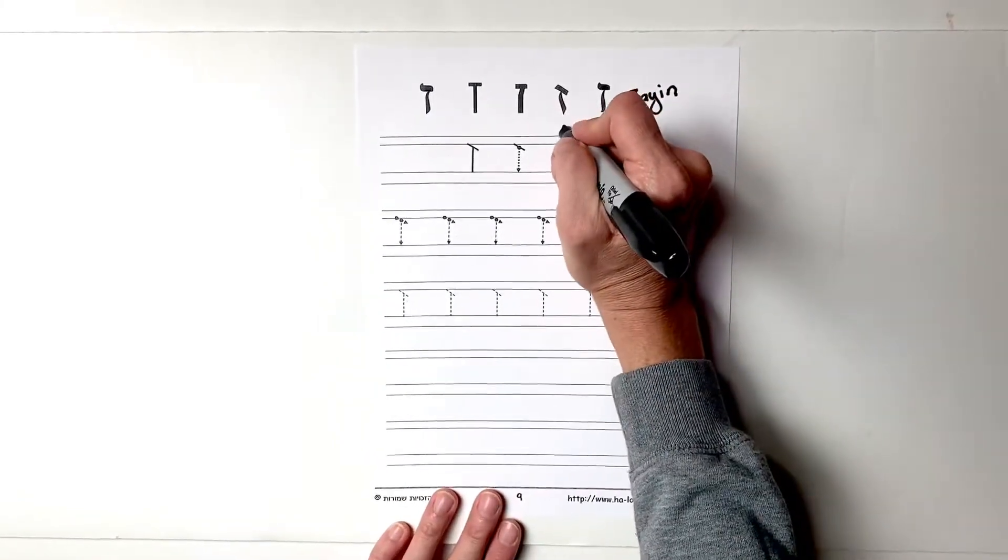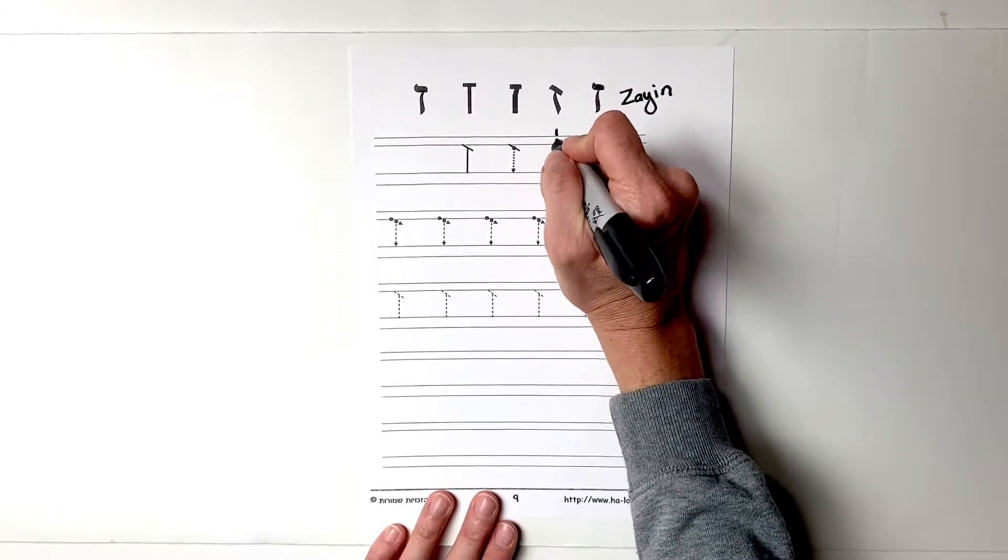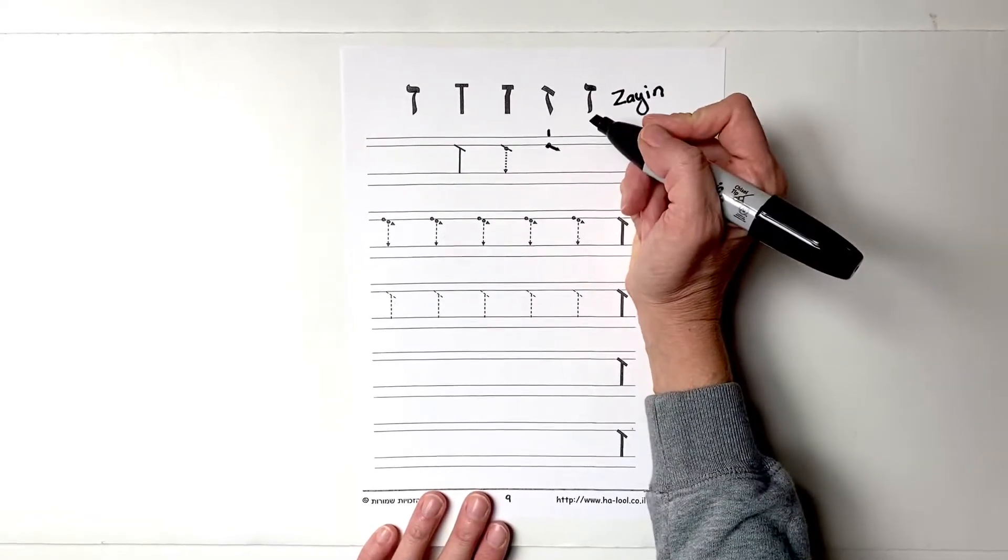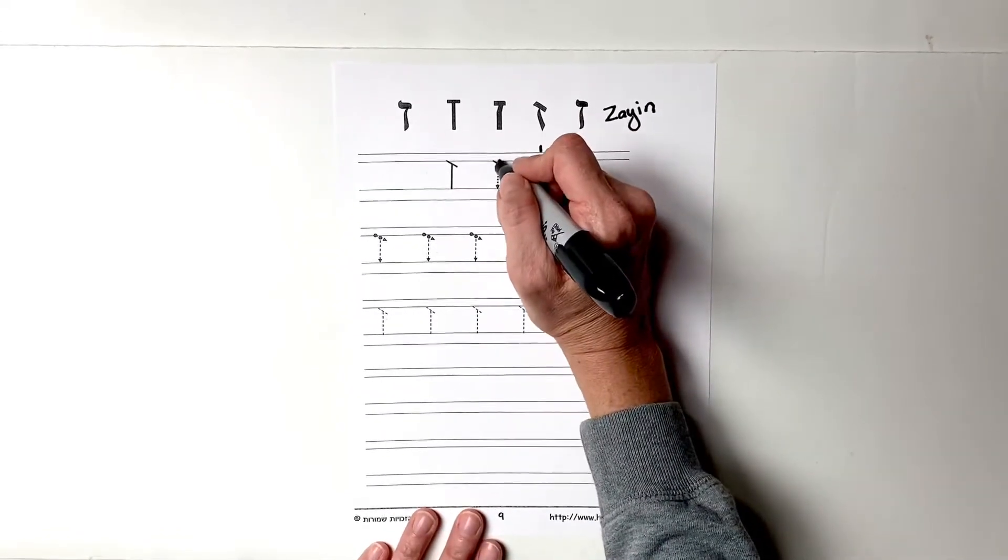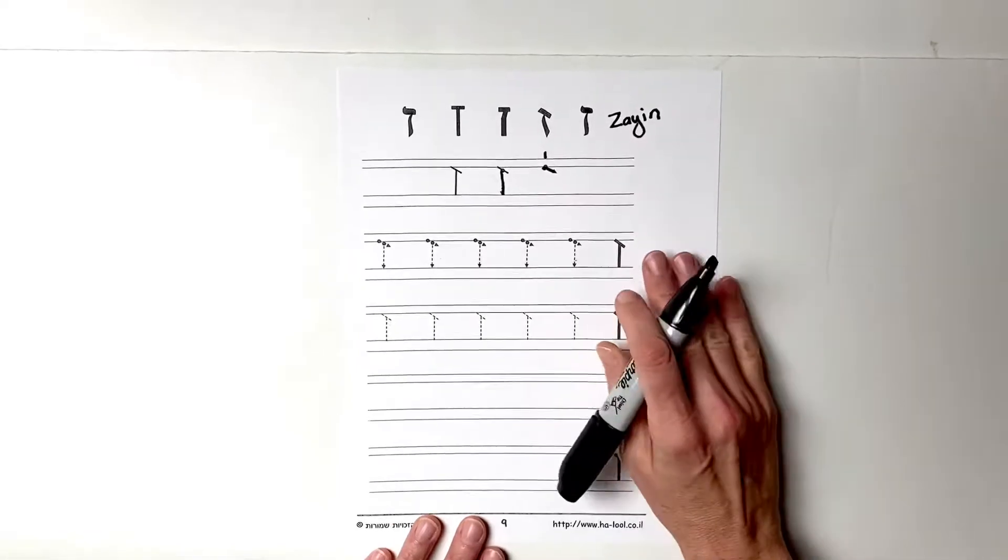Now step one, we have that little dot at the top, so we know to start there and draw an angle. Step two, we pick up our pen and move it to the center of that angle and draw a line down.